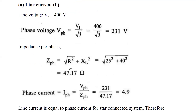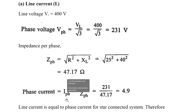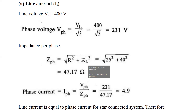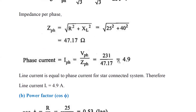We need to calculate the line current, so first we need to calculate the phase current. Phase current I_phase is equal to V_phase divided by Z_phase — it is like I equals V over R, but instead of resistance it is impedance Z. Substituting, V_phase is 231 divided by Z_phase 47.17, giving us a phase current of 4.9 amperes.